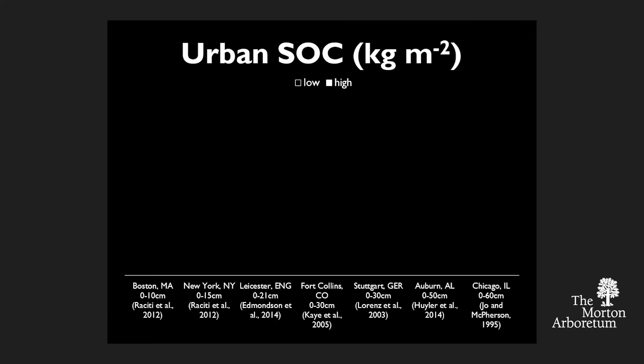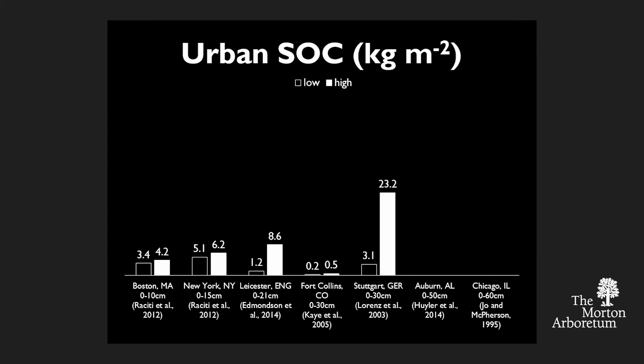Within the soil itself in cities, how much carbon do we have? Now we're talking about carbon density. The units I'll use from here on out are in kilograms per square meter — a typical unit to express carbon within soils. This first set of data includes the surface soil, just that carbon found in the upper 30 or 40 centimeters of soil, with a range of 0.2 to about 23 kilograms per square meter.